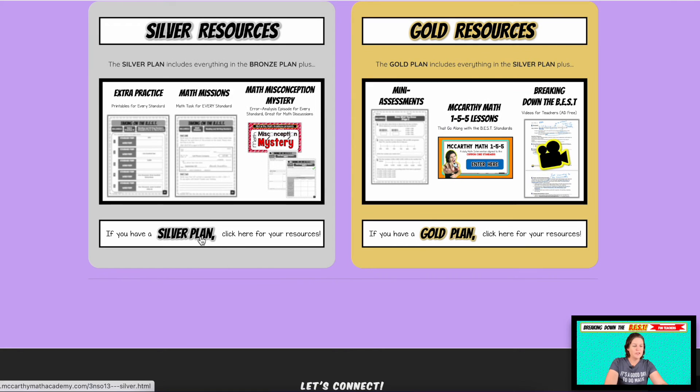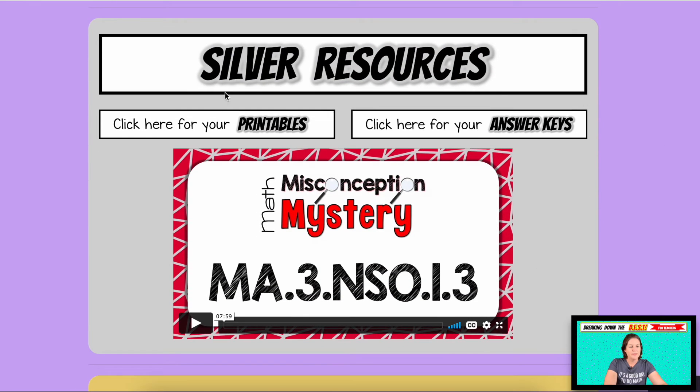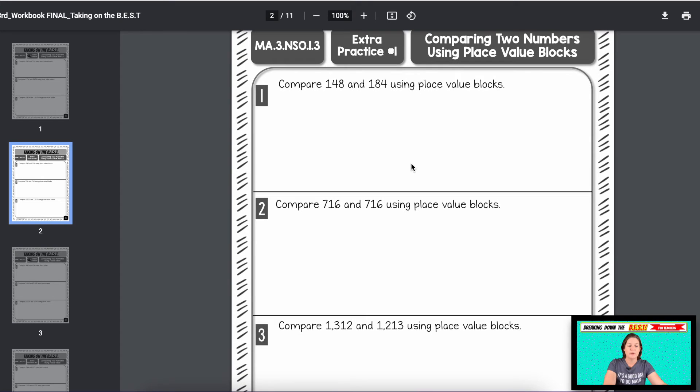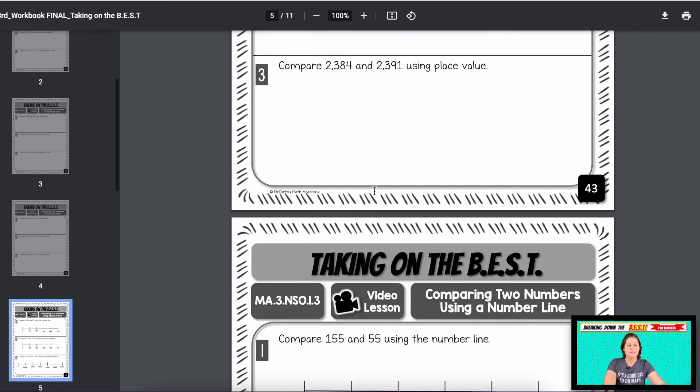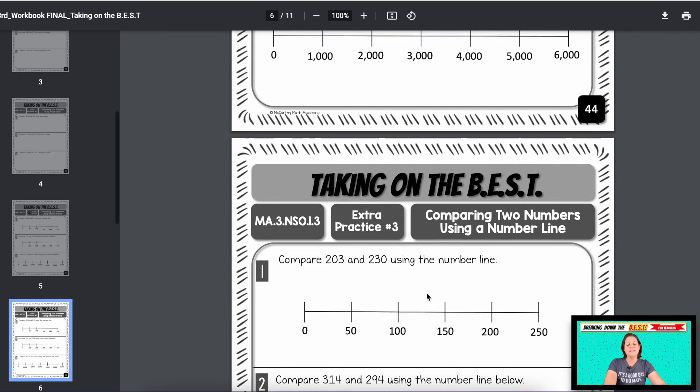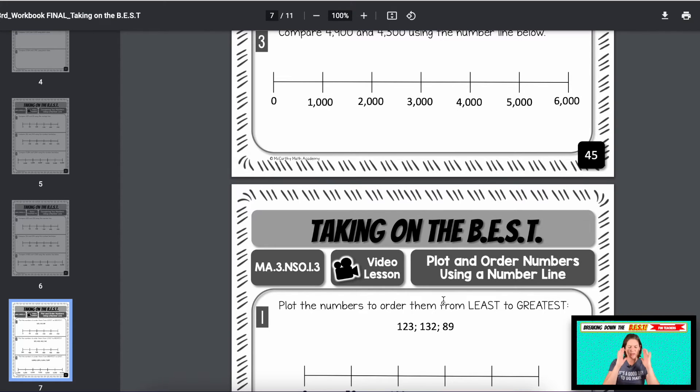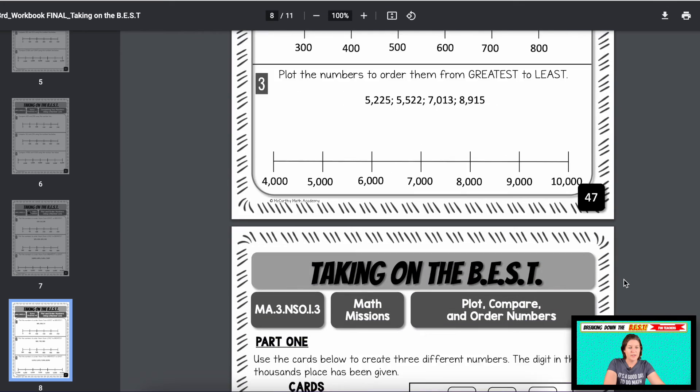Silver, you have access to all of bronze, plus you have the extra practice, the math missions and math misconception mystery. Click here for your printables. So we start with the video lesson. And then once they finish the lesson, you can have extra practice. That is very similar to what we did in the video lesson. Definitely check out those video lessons. If you're like, I don't even know how to go about teaching this, you can also preview those video lessons ahead of time.